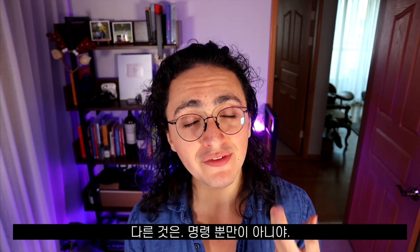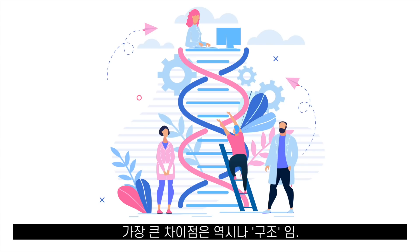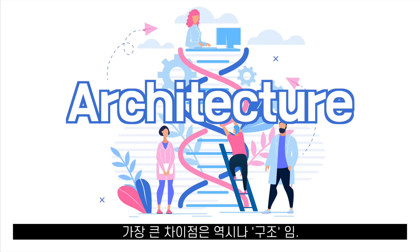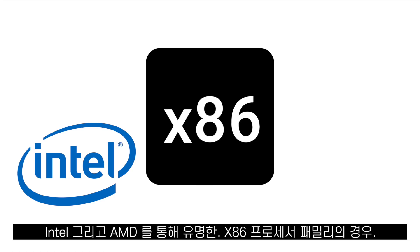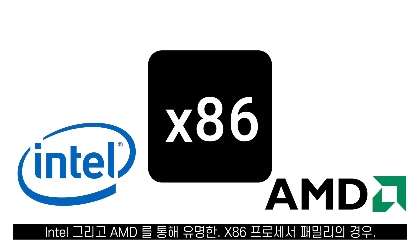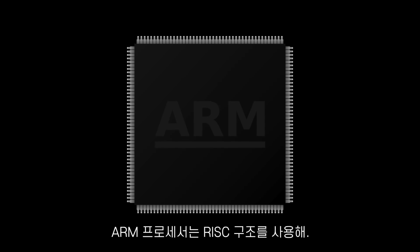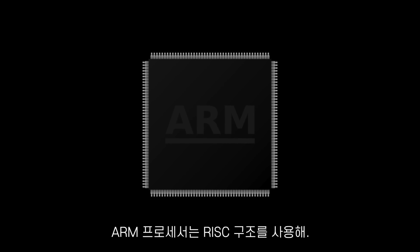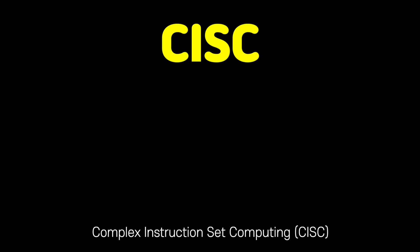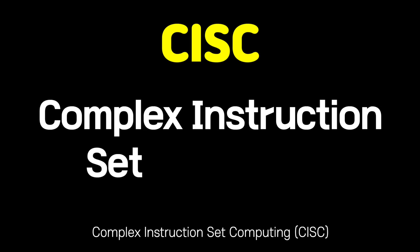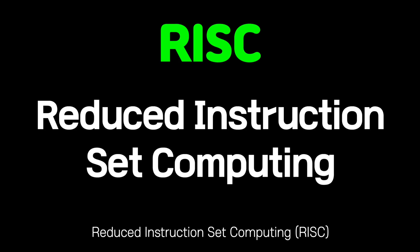But the name of the instructions is not the only thing that makes them different. The most important difference is the architecture. The x86 family of processors, which is what Intel and AMD are famous for, uses something called the CISC architecture, and ARM processors use something called the RISC architecture. CISC means complex instruction set computing and RISC means reduced instruction set computing.